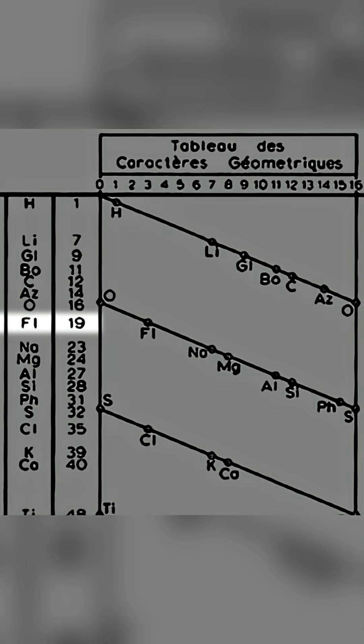Following this is fluorine, with a relative weight of 19, so that's all 16 units from the first line, plus an additional 3 units on the second line.